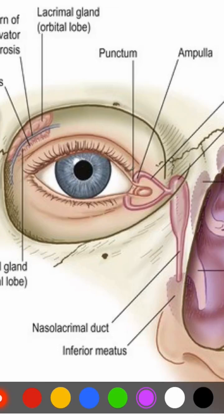The lacrimal apparatus includes the lacrimal gland and the ducts which open into the conjunctival sac. This is a lacrimal punctum, which leads to the lacrimal canaliculi and the lacrimal sac, which continues down as the nasolacrimal duct.